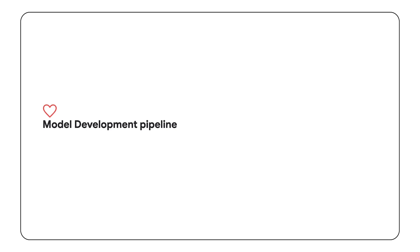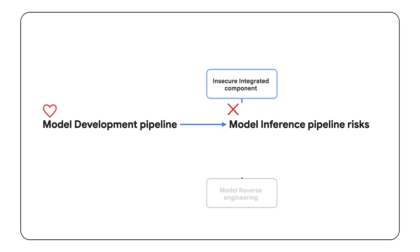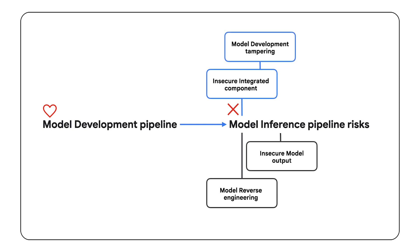What harm can come from just using an LLM model? You make an API call to a model, get amazing predictions in a second, and it all feels like rainbows and unicorns. While the development pipeline gets all the security love, the inference pipeline — where your model actually runs and makes its predictions — is also full of hidden risks.